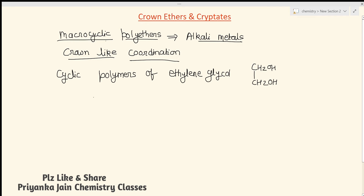Crown ethers can be of different shapes — they may have a large polycyclic structure or a smaller polycyclic structure. Their IUPAC names are very complicated, so short names are more commonly used. These short names follow the format x-crown-y, where x means the total number of atoms in the ring.